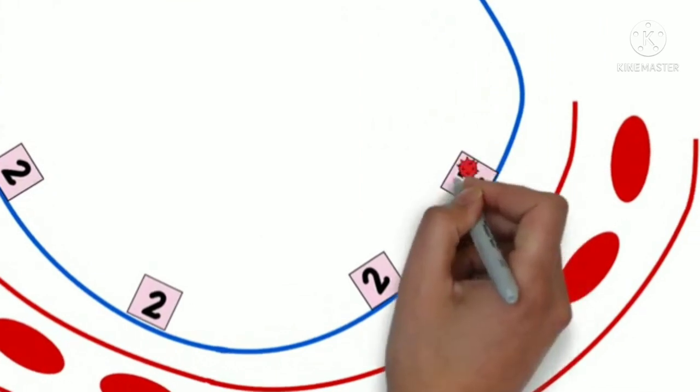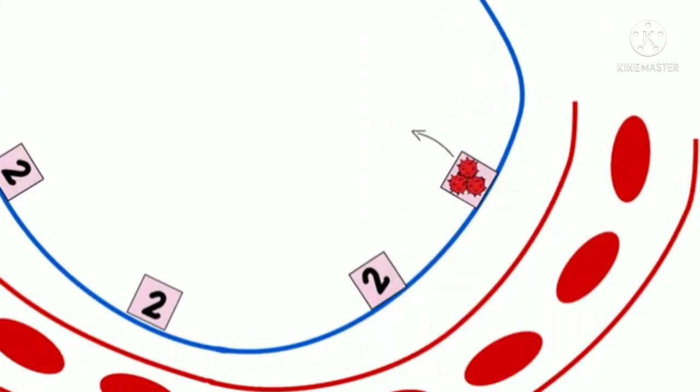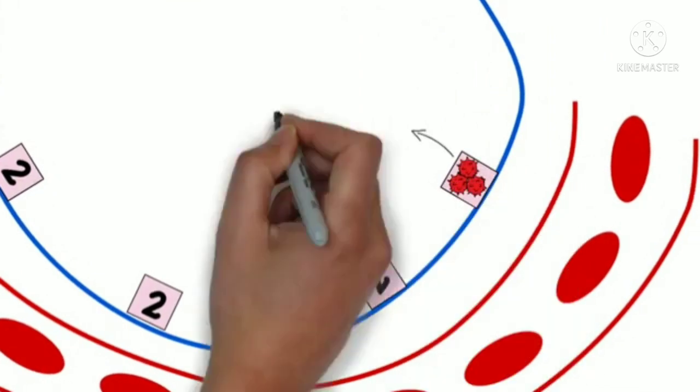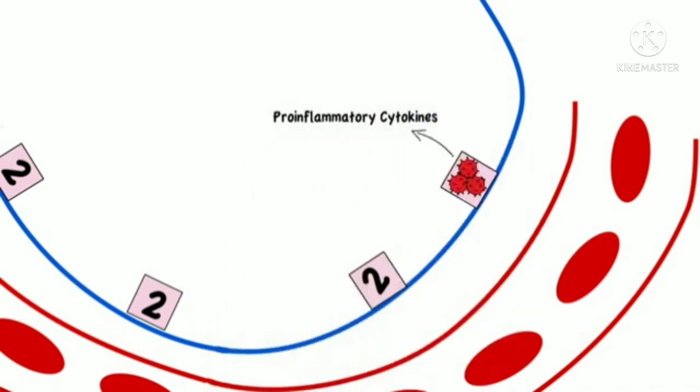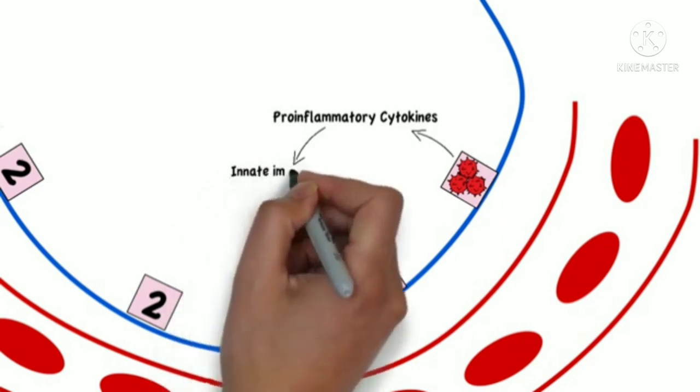Viral replication will injure these cells, leading to apoptosis and the release of pro-inflammatory cytokines, thus leading to the activation of the innate immune system.